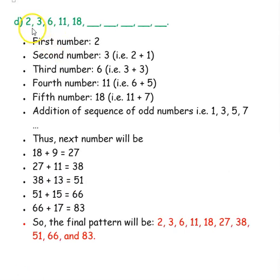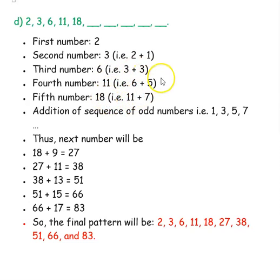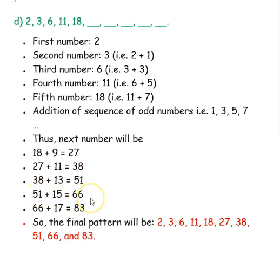Next number pattern: 2, 3, 6, 11, 18. First number is 2, next is 3 — you added 1. Then next is 6: add 3 to 3 to get 6. Next is 11: 6 plus 5 gives 11. Then 11 plus 7 is 18. So we are adding odd numbers: 18 plus 9 is 27. Then 27 plus 11 is 38. 38 plus 13 is 51.